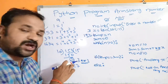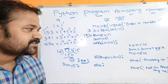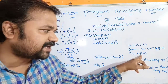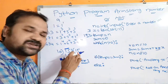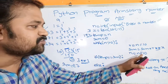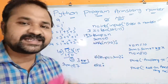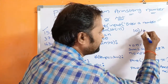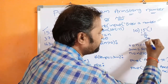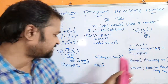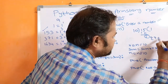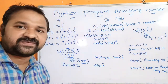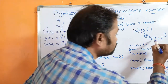Control goes back to the while loop. 15 is greater than 0, so condition is true. r = 15 % 10 = 5, so r is 5. sum = 27 + 5**3 = 27 + 125 = 152. Then n = 15 // 10 = 1. Again the condition 1 > 0 is true, so r = 1 % 10 = 1. sum = 152 + 1**3 = 152 + 1 = 153. Then n = 1 // 10 = 0.